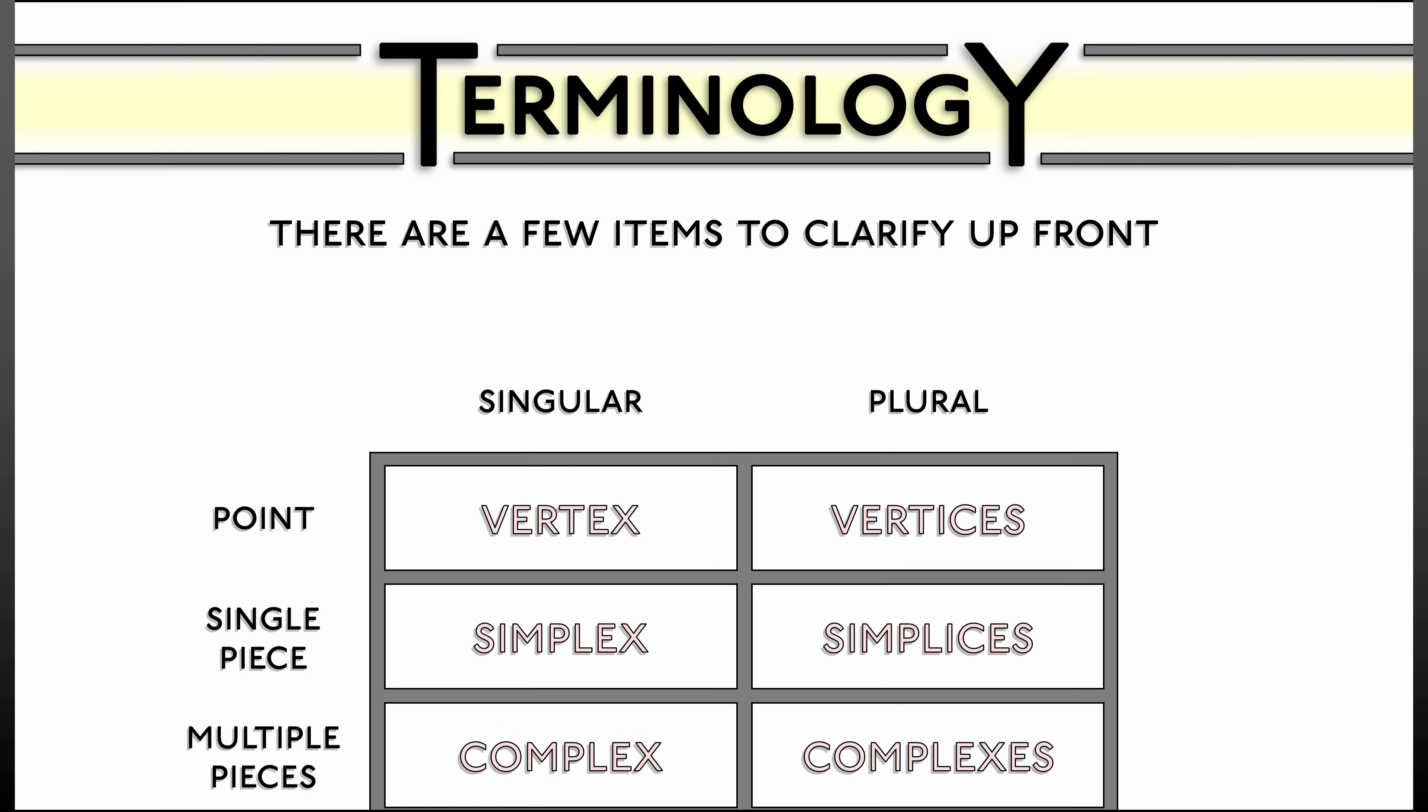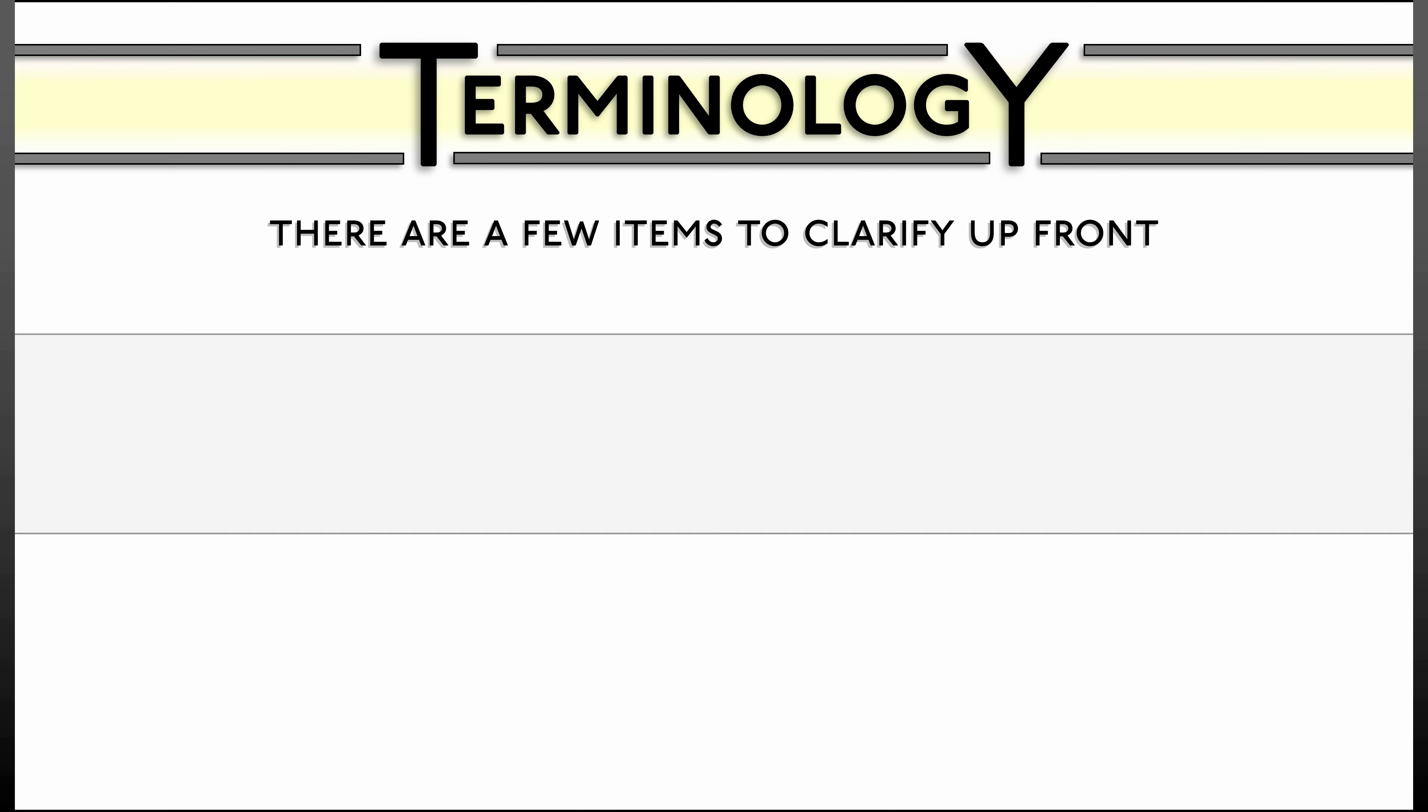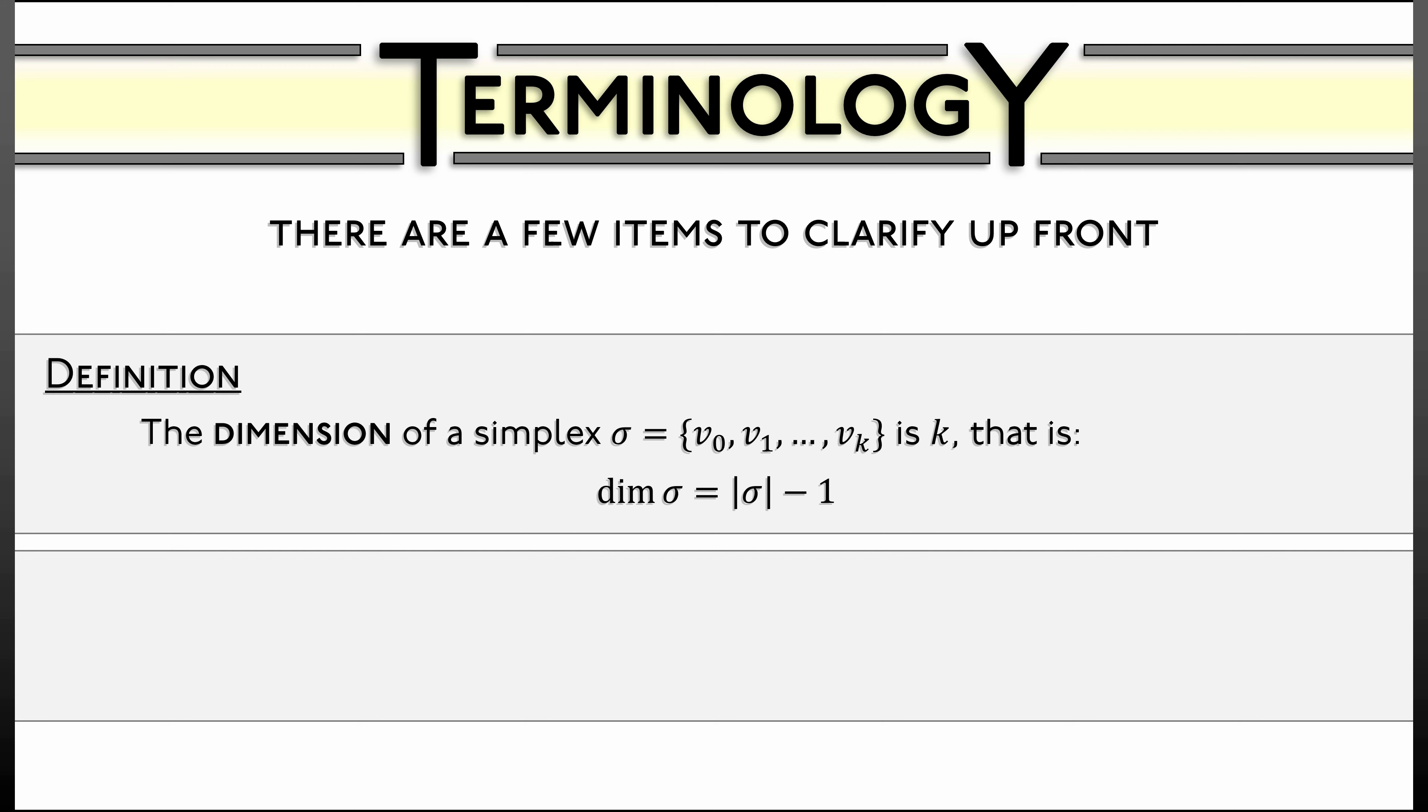But let's move on to some more interesting mathematical terminology. We say that the dimension of a simplex sigma that consists of vertices V0, V1, up through VK, is equal to K. That is, the dimension of sigma is the cardinality of sigma minus 1. We will often call such a simplex a K-simplex to denote its dimension. We can extend the notion of dimension to a simplicial complex by saying that the dimension of the complex K is the maximal simplex dimension within K, assuming that exists.